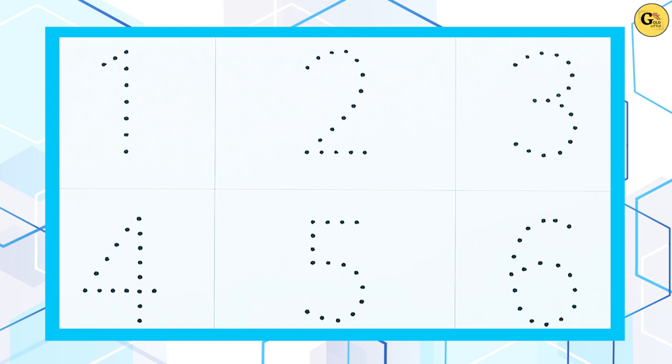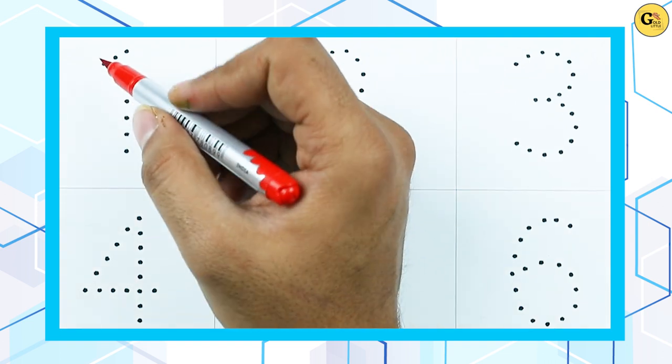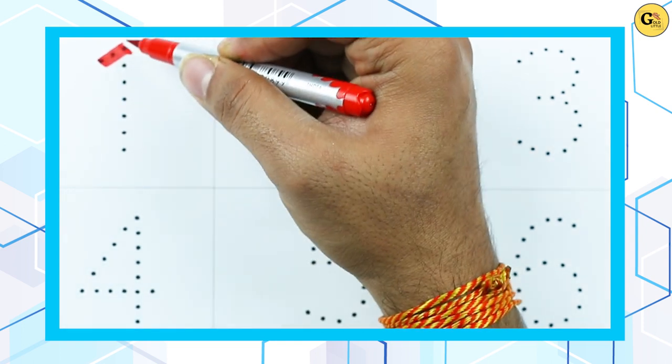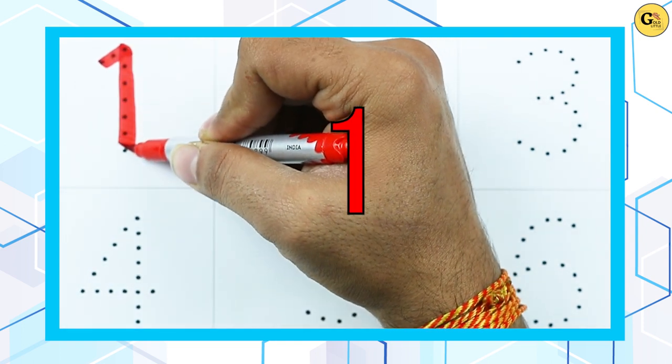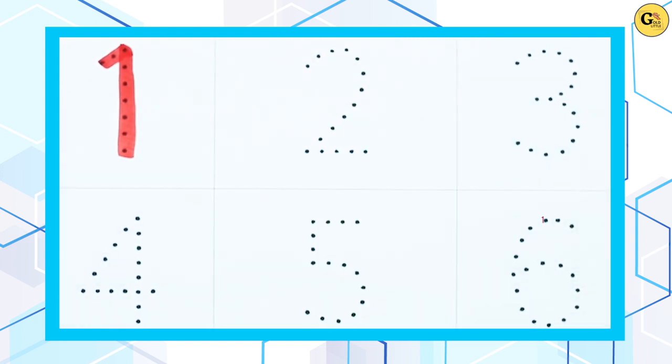How to write numbers? 1 to 10. It's number 1. Yes, number 1 with red color.